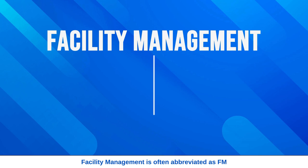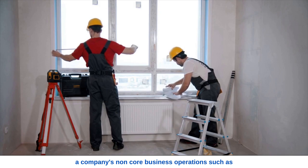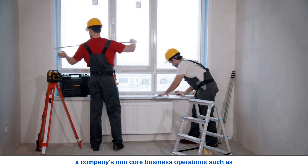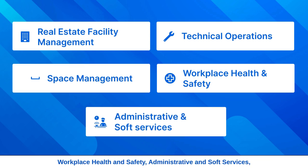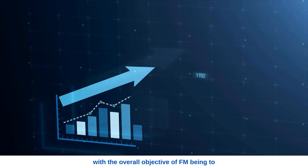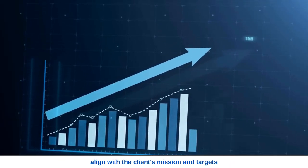Facility Management is often abbreviated as FM. The main function of FM is to manage a company's non-core business operations such as real estate facility management, technical operations, space management, workplace health and safety, and administrative and soft services, with the overall objective of FM being to align with the client's mission and targets.